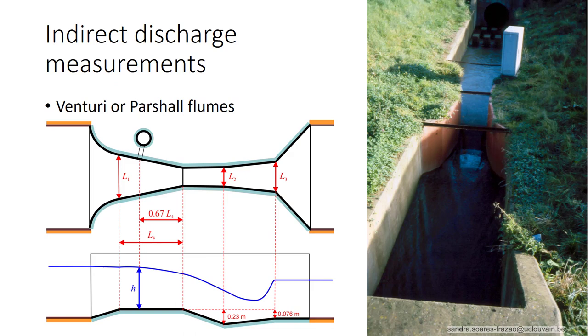Finally, specific devices like Venturi or Parshall flumes can be installed, but again only in small streams. Knowing the flow profile in such a device, and through a measurement of the water level at one or two measurement points, allows to obtain an accurate measurement of the discharge. Such a device will be discussed more in detail in a further lesson, when we will discuss water profiles in complex geometries.